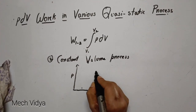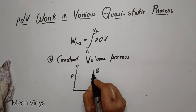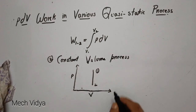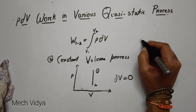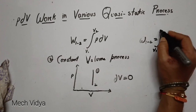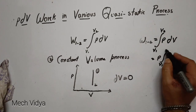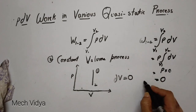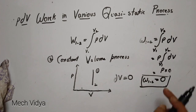For the constant volume process, applying the same logic, the line in the PV diagram will be vertical because there is no change in volume — that is, dV equals zero. Although pressure will be changing, since dV is zero, the work done during a constant volume process is zero.